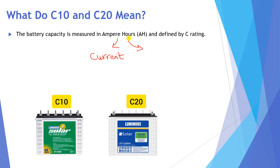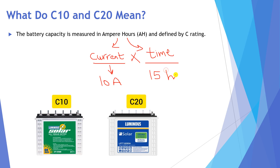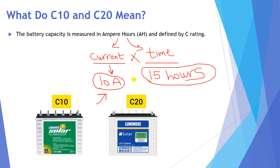and hour, representing the time. Current multiplied by time gives us ampere-hours. For example, if a battery supplies a load of 10 amperes for 15 hours, then we can supply current of 10 amperes to that load for a time of 15 hours.